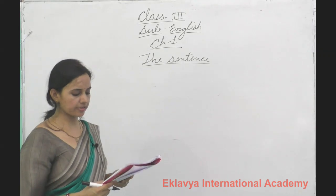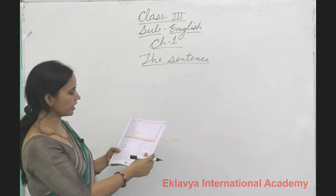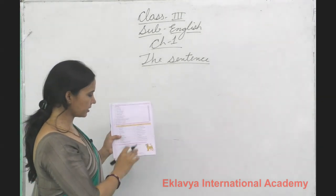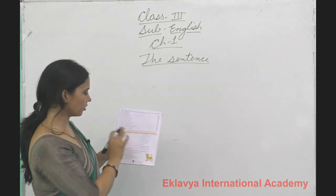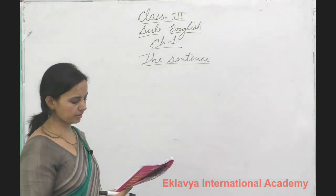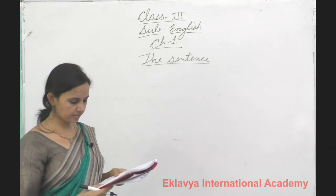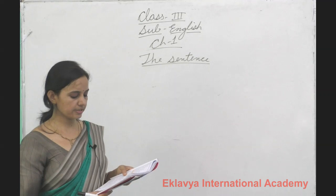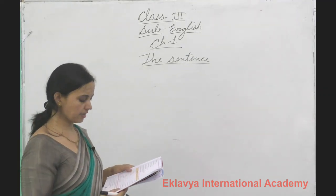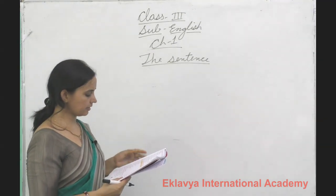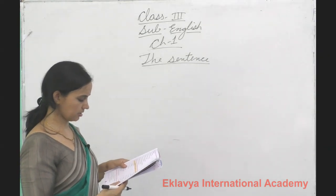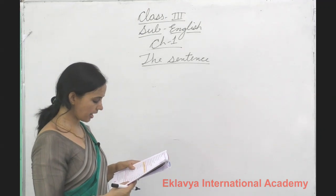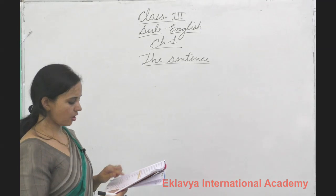Exercise C: match the correct predicates with the given subjects to make complete sense. The predicate parts are written in the second column and you have to choose them according to the subject. 'My father' — 'is reading the news' is the predicate. 'The kite' — 'flew high in the air.' 'Our class' — 'went for a picnic.' 'Rahul and I' — 'are good friends.' Here two subjects are given in that sentence.